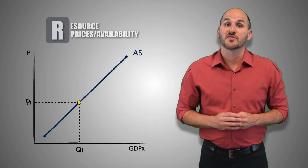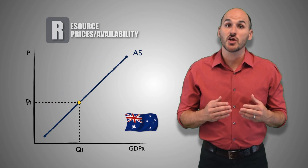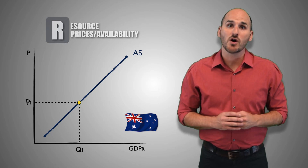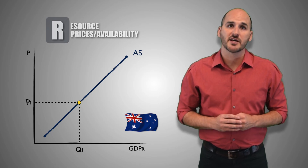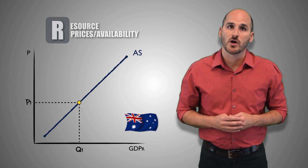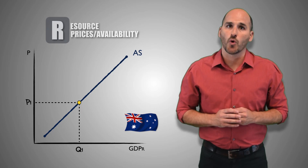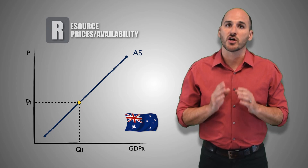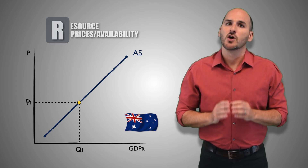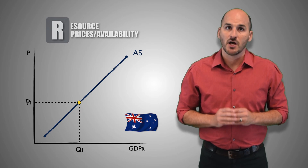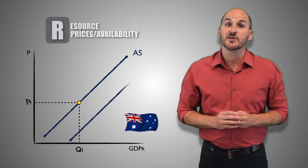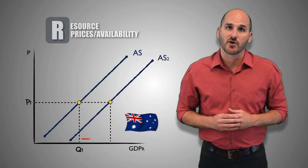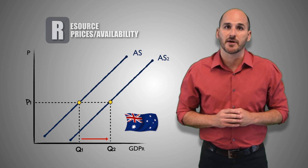Now suppose that the Australian government authorizes an increase in offshore oil drilling. As new Australian rigs begin to extract crude oil from the ocean floor, Australian oil reserves will increase, making greater quantities of crude oil available to Australian firms for the purpose of production. This increase in resource availability will cause an increase in short-run aggregate supply across the entire economy.